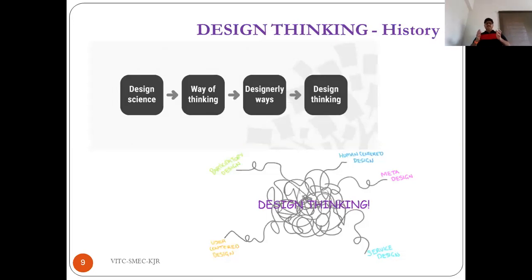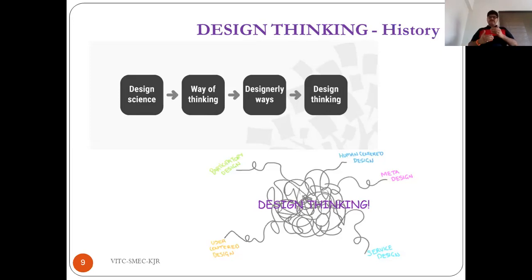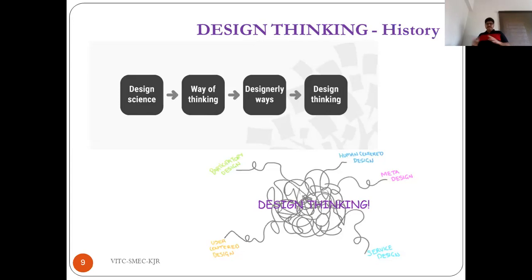Coming to the history — what is design thinking and how was it initiated? We look at design science, which was identified somewhere in the 1960s. The way design science has been integrated, identifying different forms, rules, and ways to feel that you are in design thinking — the designerly ways. Design thinking is again messy, with many varieties previously developed, like participative design, meta design, service design, user-centered design. From 2010 onwards, we have entered into human-centered design.